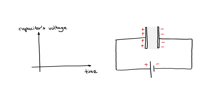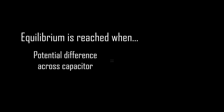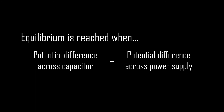As you continue charging the capacitor, the potential difference across the plate slowly increases. But there is a limit to how much charge can be stored on a conductor. The capacitor will reach equilibrium when the potential difference across the capacitor is equal to the potential difference of the cell.